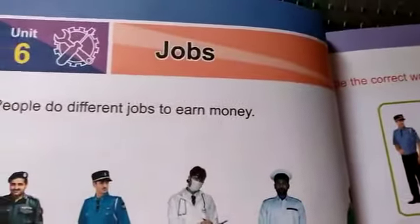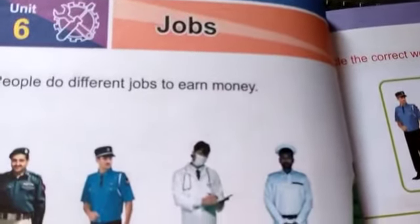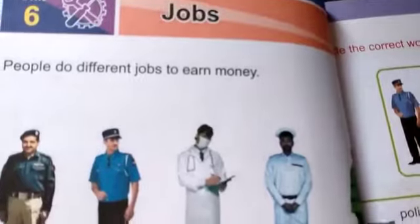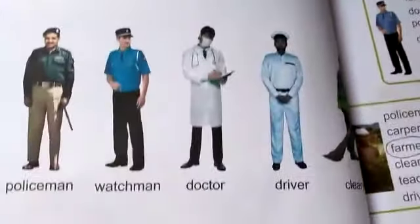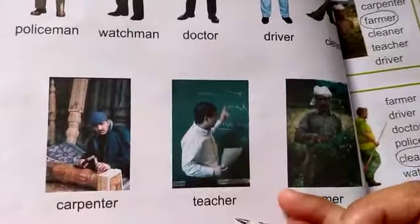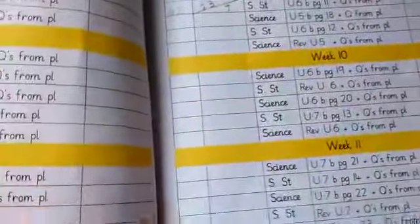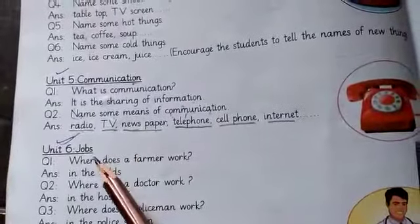ये unit हम पहले भी कर चुके हैं. ये आज आपके planner में दुबारा revise हो रहा है. Students, ये आज हमने revise करना है. इस पेज में जस्ट हमें ये बताया है: People do different jobs to earn money. हमें professions बताए हैं इस पेज में, के कौन क्या जॉब करता है. अब हमने इसके questions revise करेंगे. Unit 6 — Jobs.